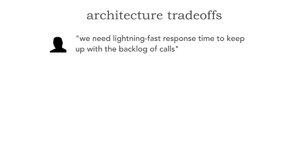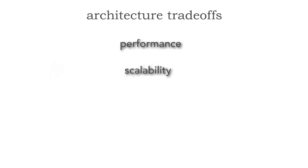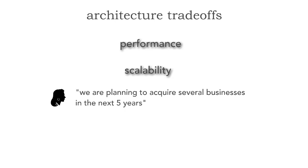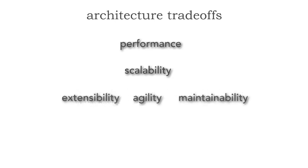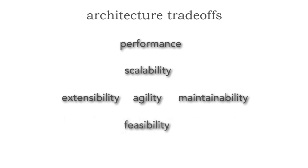For example, in our world you might have, for the exact same system, these statements: we need lightning-fast response time to keep up with a backlog of calls, which we know of as performance. Over time, we are expecting the entire company to use this system, which translates to scalability. We're planning to acquire several businesses in the next five years — that forces us to think about extensibility, agility, and overall maintainability. And of course there's always that stakeholder who says the budget and time frame is very tight, which we know as feasibility. If we try to satisfy and max out every single one of these ilities, we will be just like the ship's architect in the Vasa and end up in trouble.